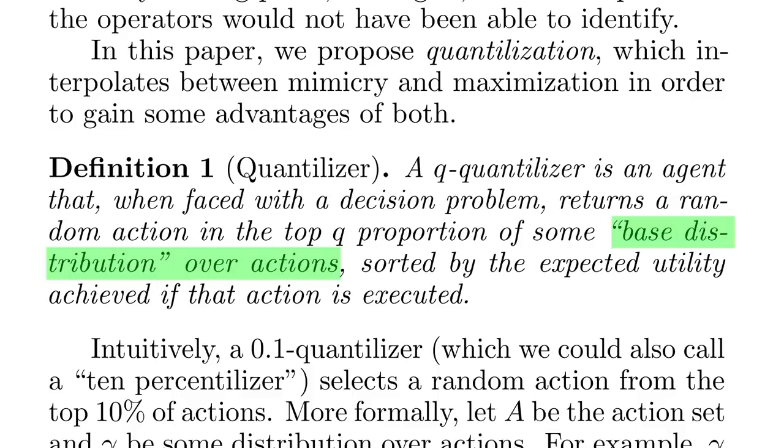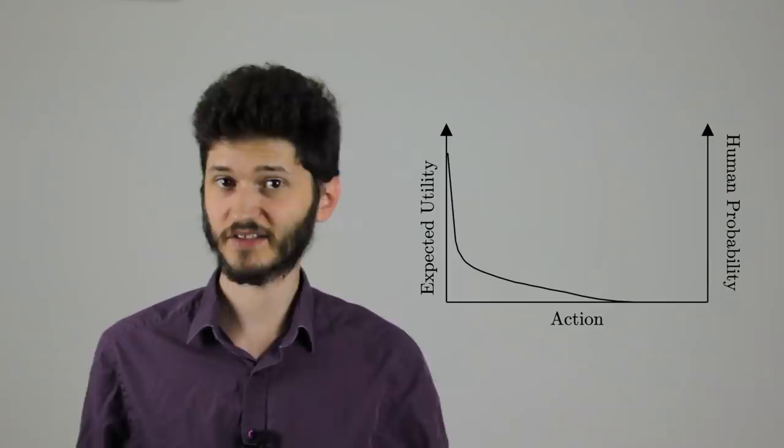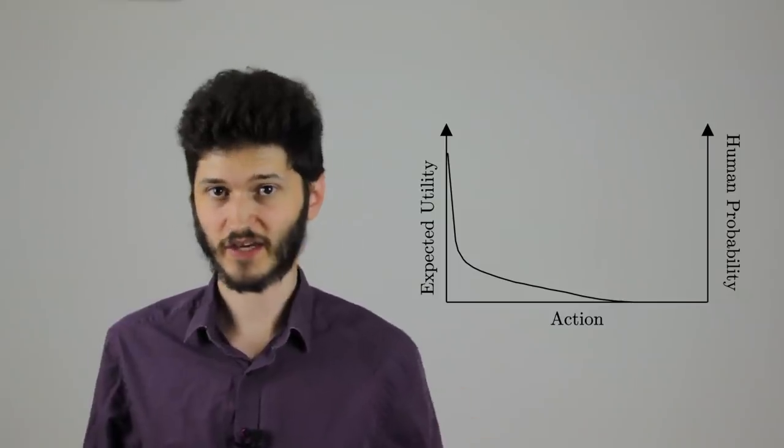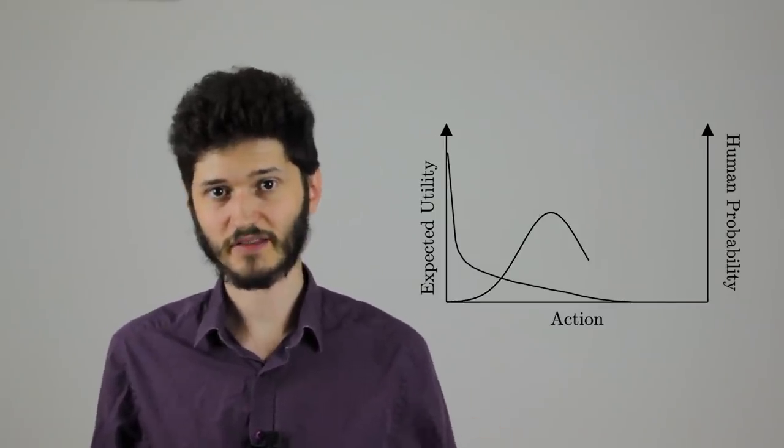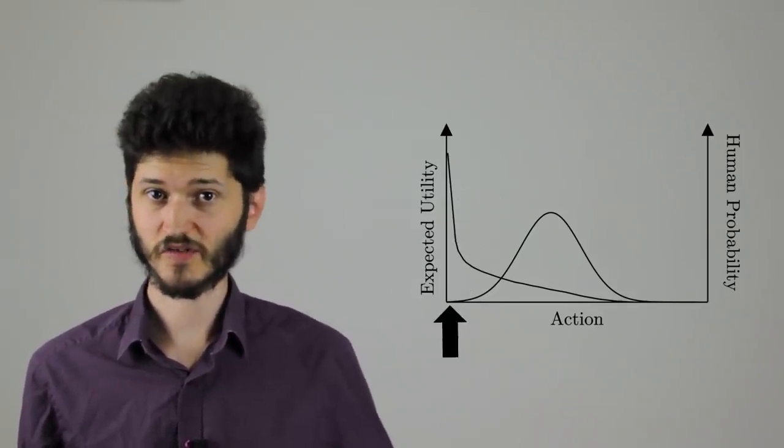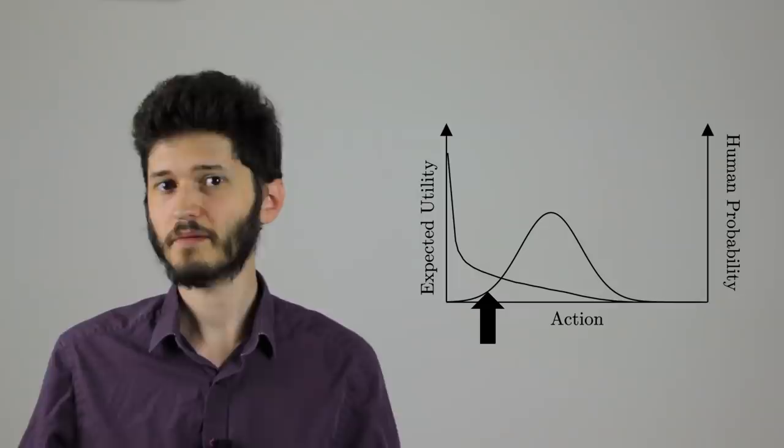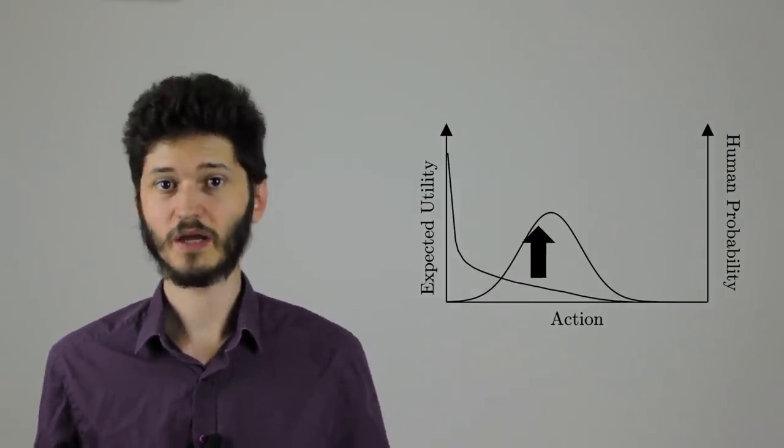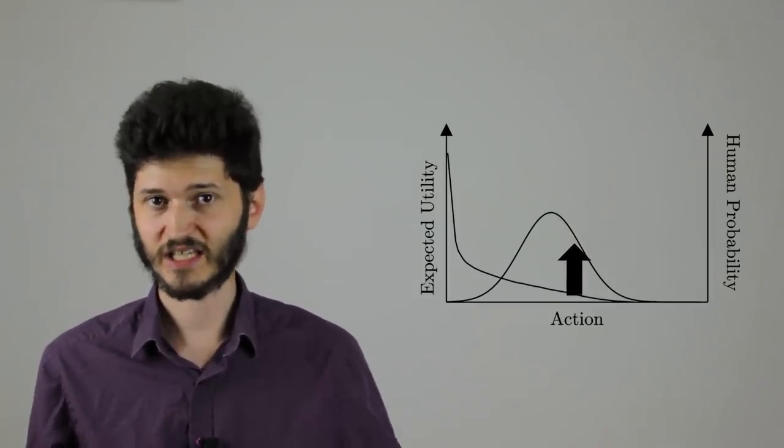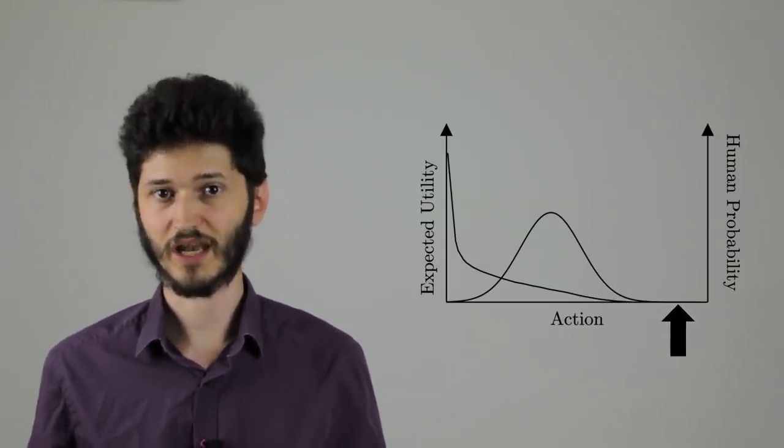Then we look at our base distribution over actions. What is that? In the version I'm talking about, we're using the human imitation system's probability distribution over actions for this. So our base distribution is how likely a human is to do each action. That might look something like this. No human is ever going to try the wacky extreme maximizing strategies, so our human imitator gives them a probability of basically zero. Then there are some really good strategies that humans probably won't think of, but they might if they're really smart or lucky. Then a big bump of normal strategies that humans are quite likely to use that tend to do okay. Then tailing off into less and less good strategies and eventually stupider and stupider mistakes that humans are less and less likely to make.